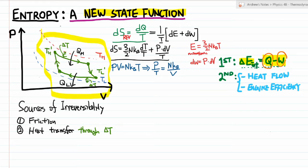So this is the irreversible Carnot cycle. It's remarkably similar to the reversible Carnot cycle. In fact, if I didn't draw the isotherms of the high and low temperature reservoirs and just drew the Carnot cycle alone, you wouldn't be able to tell if it's irreversible or reversible.